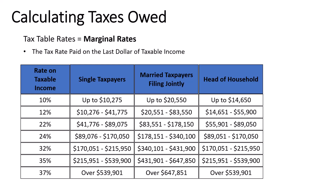Let's say I'm a single taxpayer that made $50,000. If I go to the single taxpayer column and go down to the tax rate that includes $50,000 — looking for the range that contains your taxable income — we'll see that that is a 22% tax rate. That is a marginal rate and we need to calculate our taxes owed for each of our tax brackets: the 10%, 12%, and 22%. So in this video we're going to do step-by-step calculations for each of these tax filing statuses. Let's get started.